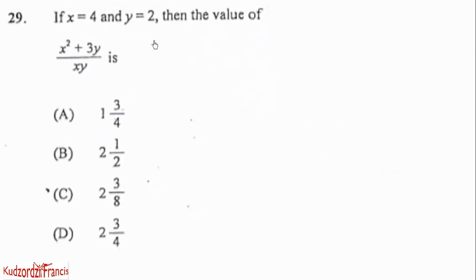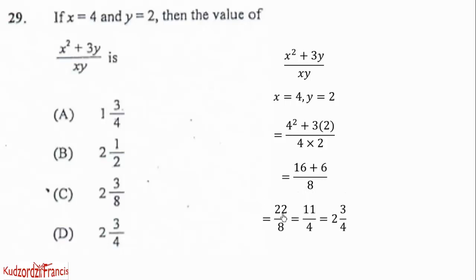Then let's go to 29. If x equals 4 and y equals 2, then the value of this is what? So it is just a matter of substituting. We are given the expression, so we substitute x equals 4 and y equals 2. That will give us 4 squared plus 3 times 2, all over 4 times 2. So you know 4 squared will be 16, and 3 times 2 will be 6, 4 times 2 is 8. And that will give us 22 by 8. You can reduce by 2. And if you reduce by 2, this will give us 11 and this will also give us 4. That's what we had here. And you know 4 will go into 11 two times and the remainder will be 3. So the correct answer will be 2 whole number 3 over 4.